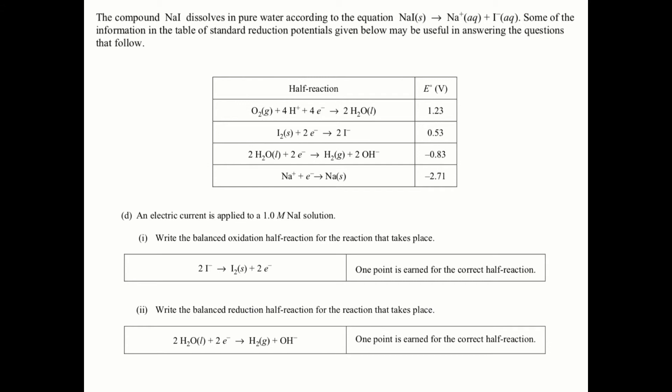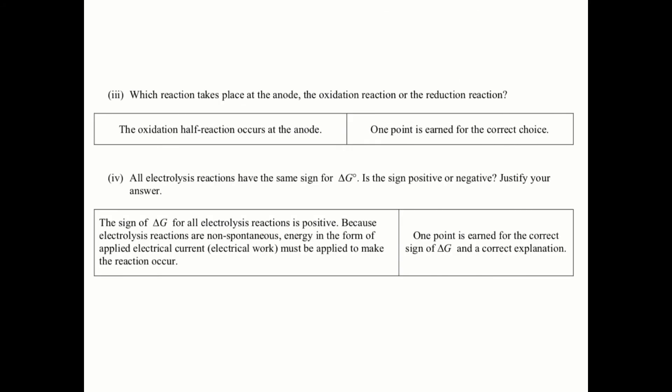Part II asks for the reduction half-reaction. Here again, I have water as a reactant, which is exactly what I want, and sodium as a reactant, which is what I want because remember we want sodium ions, iodide ions, or water. Which of those is least negative? Well, the water. And so that's going to be my reduction half-reaction.